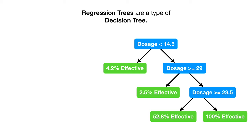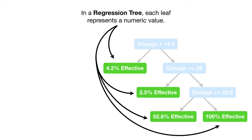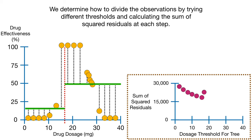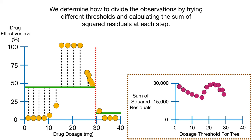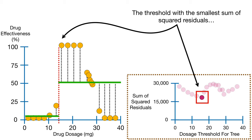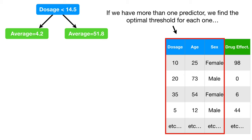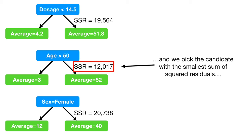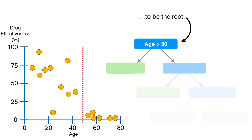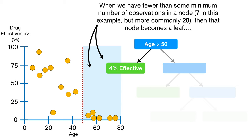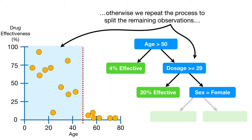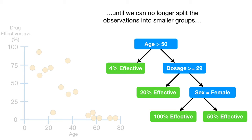In summary, regression trees are a type of decision tree where each leaf represents a numeric value. We determine how to divide the observations by trying different thresholds and calculating the sum of squared residuals at each step. The threshold with the smallest sum of squared residuals becomes a candidate for the root. If we have more than one predictor, we find the optimal threshold for each one and pick the candidate with the smallest SSR to be the root. When we have fewer than some minimum number of observations in a node — typically 20, but 7 in this example — that node becomes a leaf. Otherwise, we repeat the process until we can no longer split the observations into smaller groups.